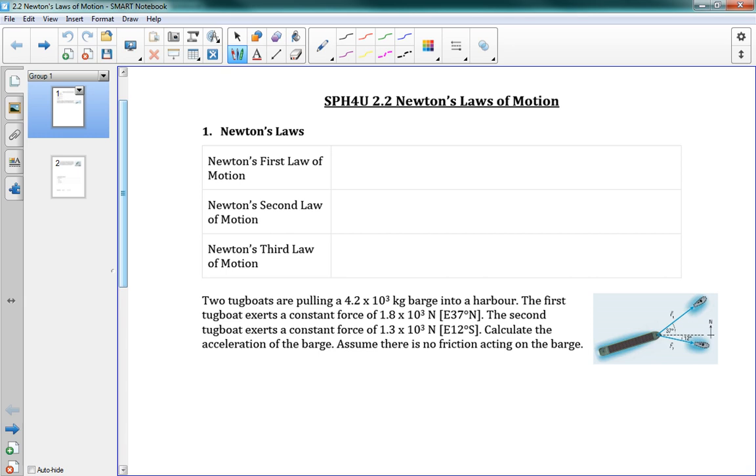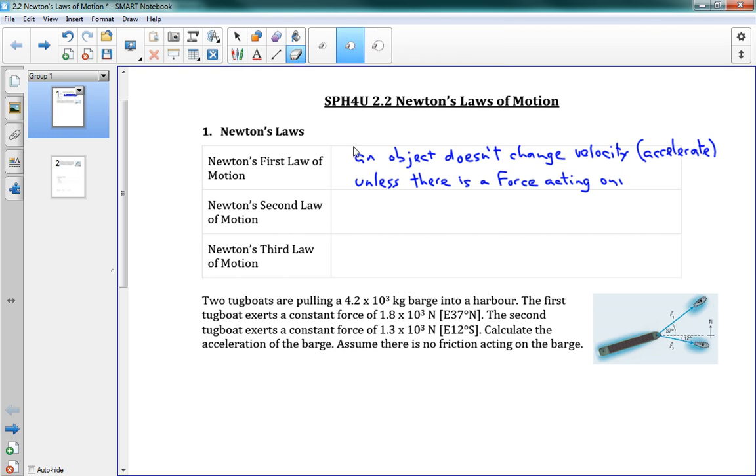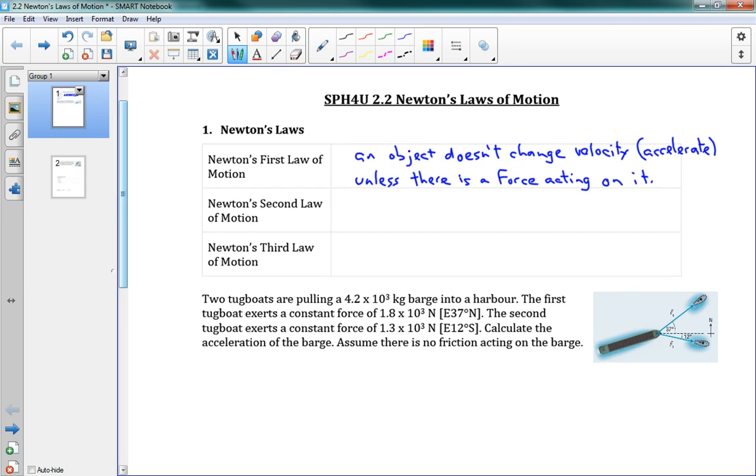So to start with, just a bit of recap. Newton had three laws of motion. The first one was Newton's First Law. And it says, basically, that an object doesn't change velocity, which means that it doesn't accelerate unless there is a force acting on it. Another way of saying that is an object in motion stays in motion, and an object at rest stays at rest. I like to say it this way though. It makes more sense to me, just saying it stays the same velocity unless there's a force on it.